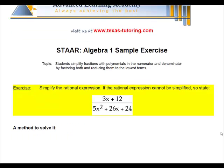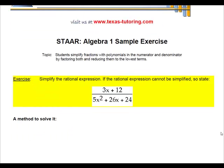The exercise which we include here is the following. Simplify the rational expression. If the rational expression cannot be simplified, so state. We have 3x plus 12 over 5x squared plus 26x plus 24.